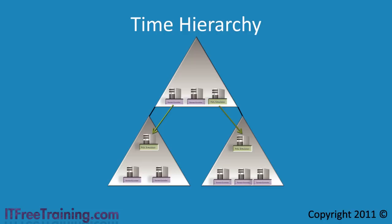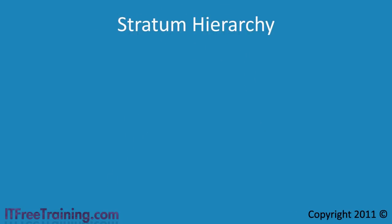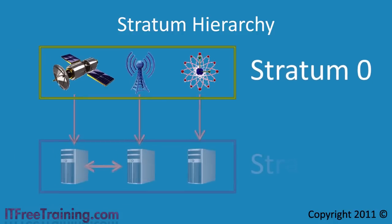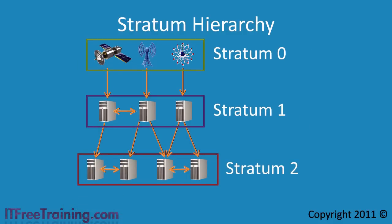If you decide to configure an external time source, you need to understand a little terminology on how external time sources work. External time sources use a hierarchy with each level called a stratum. At the top of the hierarchy, or stratum 0, are very reliable clocks — these are hardware atomic clocks, GPS clocks, and radio clocks. Stratum 0 clocks are connected directly to stratum 1. Stratum 1 computers generally act as a time source for the next level, stratum 2. In some cases stratum 1 and stratum 2 clocks will have restricted access while others are open to the public.